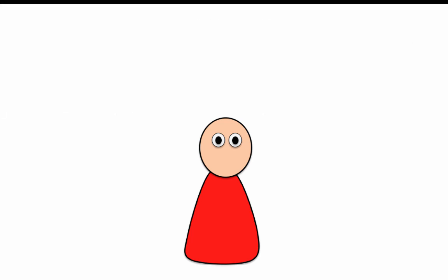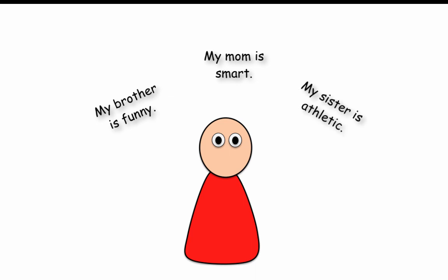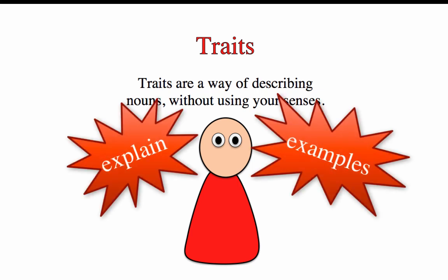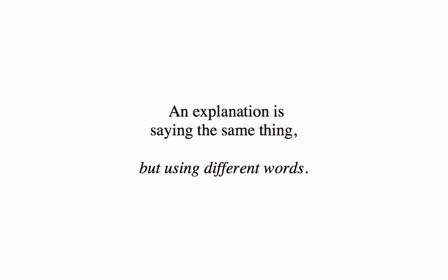But it's also possible to describe things about people that we can't detect with our senses. My brother is funny. My mom is smart. My sister is athletic. Descriptions about people that don't rely on our senses are called traits. If we can't describe them using our senses, we have to explain and give examples.